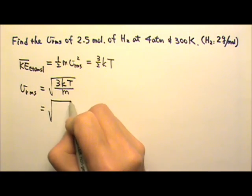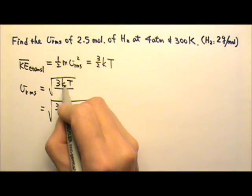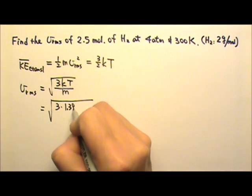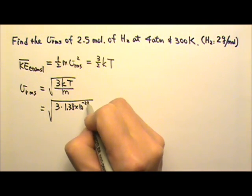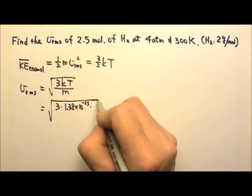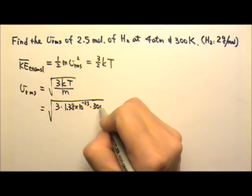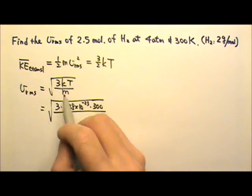So if I want to find it, I can just plug in k, the Boltzmann's constant. It's 1.38 times 10 to the negative 23rd. The temperature is 300 Kelvin and then divide by the mass.